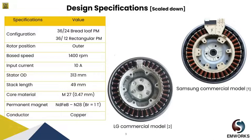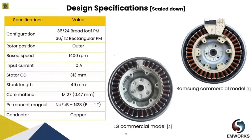Both models are outer rotor design configurations because they must be directly connected to the outer drum of the washing machine. Just for analysis purposes, we have scaled both commercial models, and we have set the base speed as 1400 RPM with an input current of 10 amperes. We have also kept the outer diameter of both models at 313 millimeters.